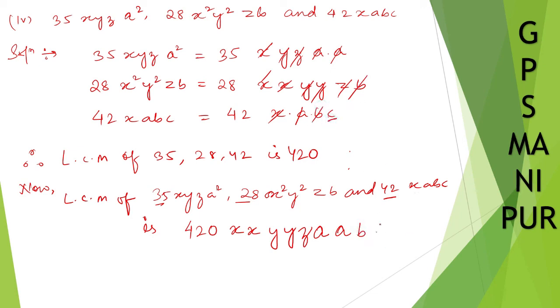And C is left out, so write down C. So I can write down this way as 420. X into X will be x². Y into Y will be y². Z is alone. A, A into A, that is a², B, C. So this is the required LCM. That's all. Thank you so much. We will meet in the next video.